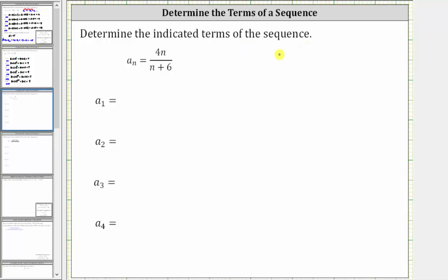Determine the indicated terms of the sequence given a_n = 4n/(n+6). The important thing to recognize here is the subscript indicates the value of n.